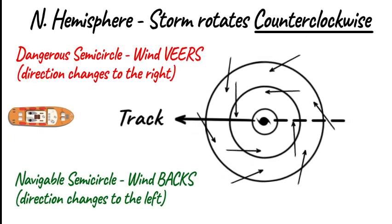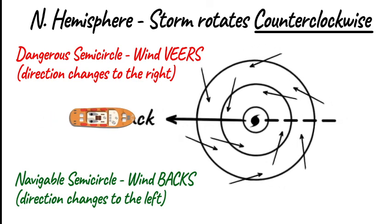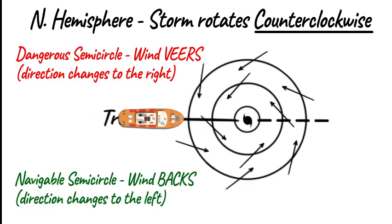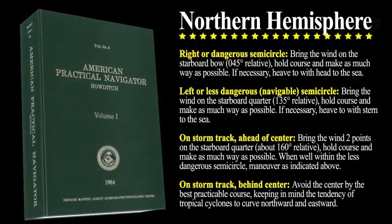On-storm path ahead of storm center: If the wind direction is steady or nearly steady, with decreasing atmospheric pressure, the ship is most likely on the storm path and ahead of the storm center. In the Northern Hemisphere, maneuver as necessary to keep the wind on the starboard quarter, about 160 degrees relative, and increase speed as much as possible. When the ship is in the navigable semicircle proper, put the wind at about 135 degrees relative. Continue making as much way as possible.